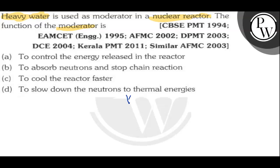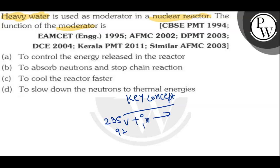The key concept of this question is based upon the working of a moderator. In a nuclear reactor, U-235 reacts with one neutron and dissociates into barium and krypton, releasing three extra neutrons.